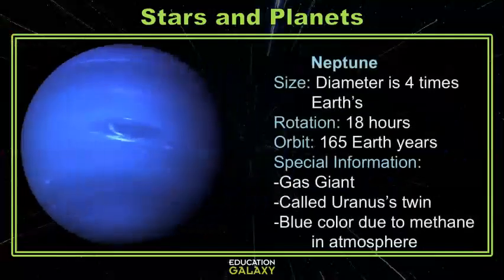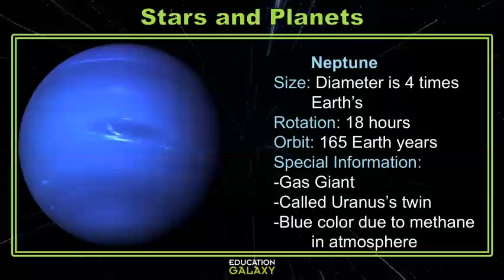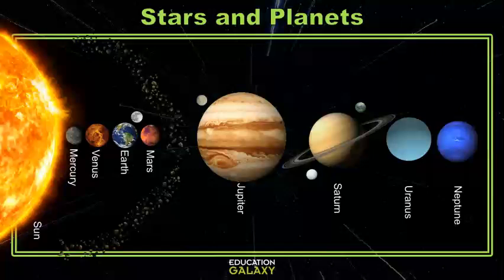Our last planet is Neptune. Neptune looks very similar in size to Uranus but has a beautiful blue color due to methane in the atmosphere. It's another gas giant, but it's super cold because it's so far away from the sun.